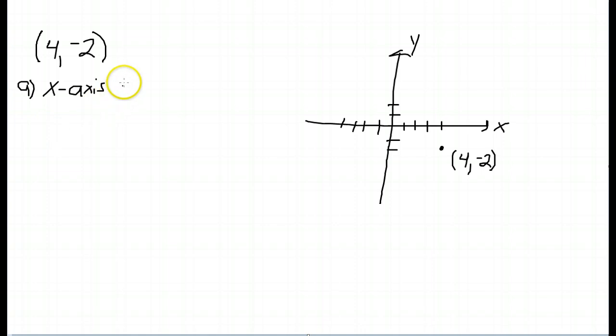So all I do is just change the sign of the y-coordinate. So I have 4, comma, positive 2. So when I plot that point right here, label it 4, comma, 2. This point is symmetric with the original point on the other side of the x-axis. Symmetric with respect to the x-axis.